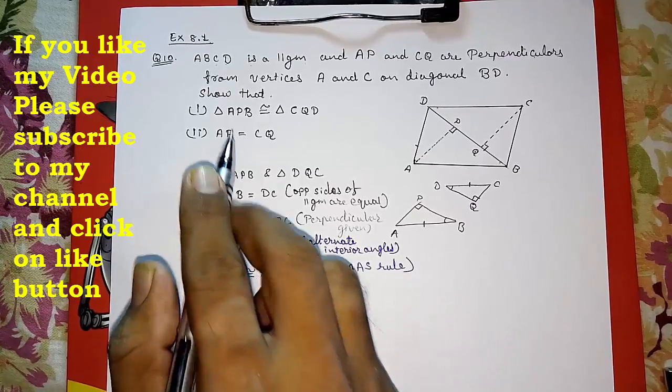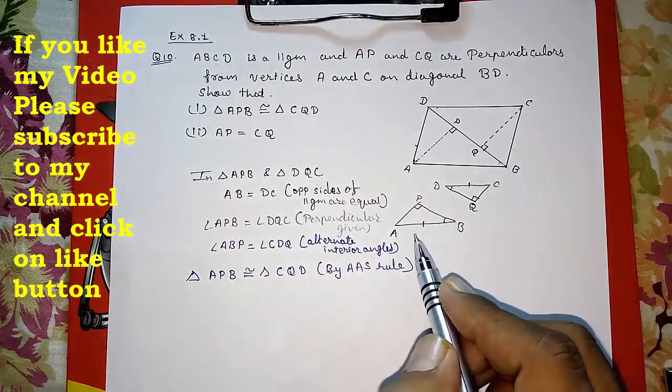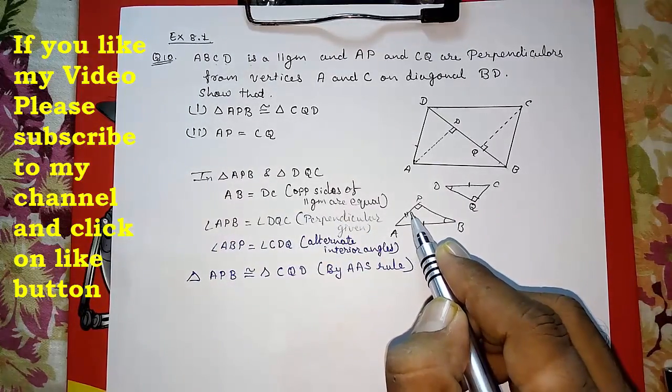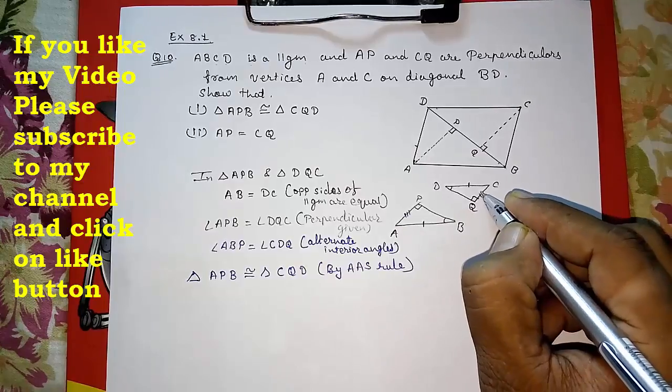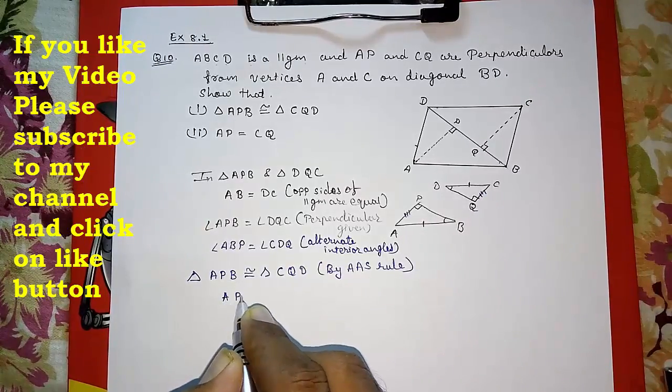And they are congruent, so this is our first answer. Now they said what can you say about AP and CQ? This AP equals to CQ. Why? By CPCT. AP is equal to CQ by CPCT. So this way we can solve this problem.